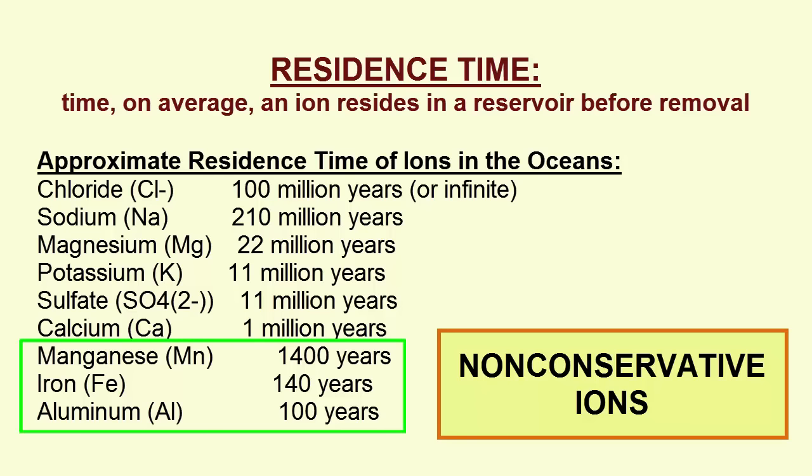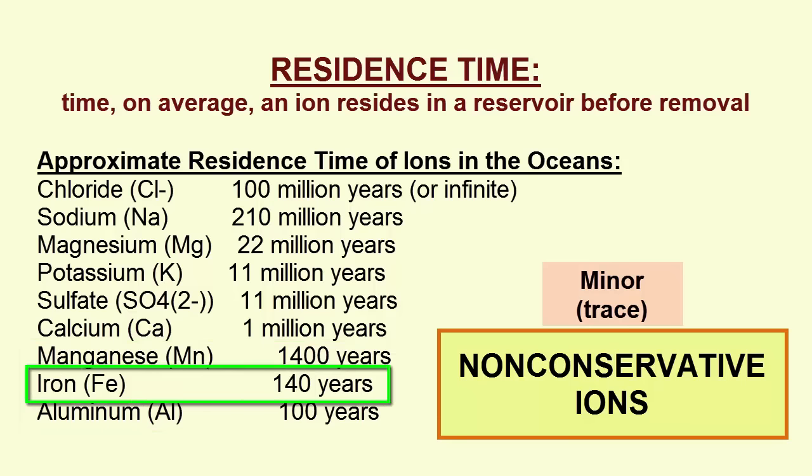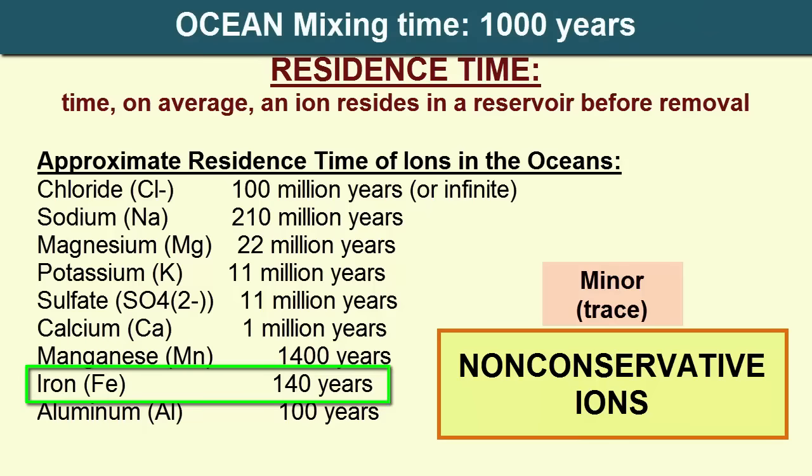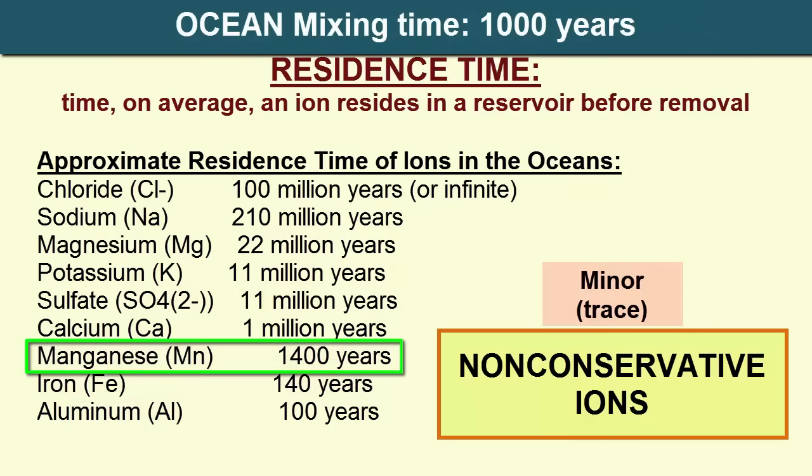Non-conservative constituents have short residence times, so they are found in low abundance. We can see that iron has a residence time of only 140 years, much less than the ocean's mixing time. Manganese has a residence time close to the mixing time. Both iron and manganese are considered trace constituents.